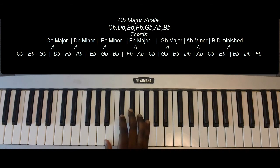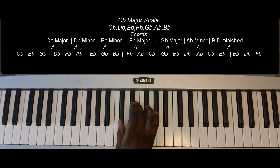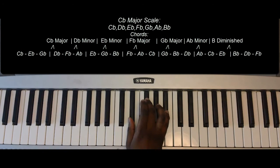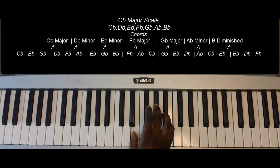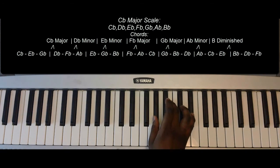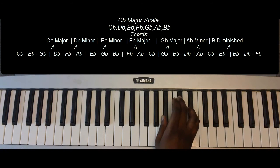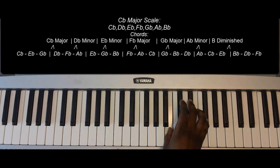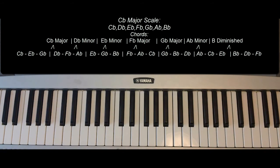Going back, calling out the chords: C-flat major, D-flat minor, E-flat minor, F-flat major, G-flat major, A-flat minor, B-flat diminished, and C-flat major. And that is the C-flat major scale.